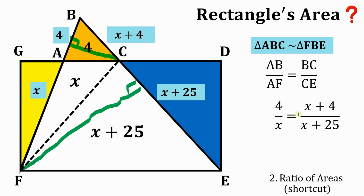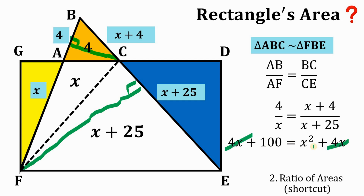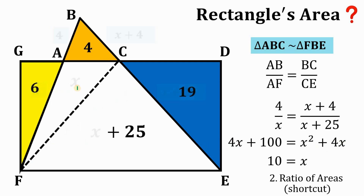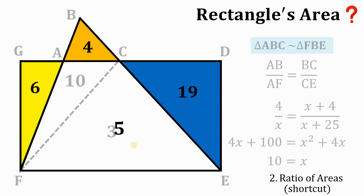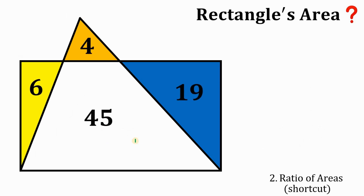So we have the equation 4 over X equals (X plus 4) over (X plus 25). Cross multiplying gives 4X plus 100 equals X squared plus 4X. Subtracting 4X from both sides and taking the square root, we get X equals 10. So X is simply 10 square units. Adding 10 and 25 gives 35, and 10 plus 35 equals 45 square units — so the white region is again 45 square units.